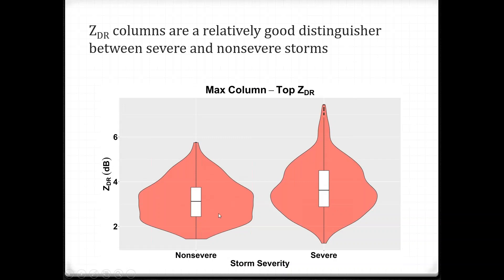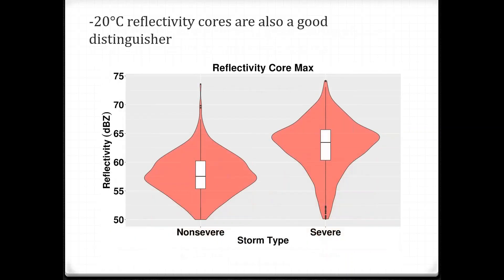A similar idea applies to what I've called max column top ZDR — stepping up to the top elevation angle where you can see 1+ dB ZDR within the column and measuring the maximum ZDR value there. We see a statistically significant difference in max ZDR at column top between severe and non-severe storms. One important finding is that minus 20°C reflectivity cores are also a pretty good distinguisher between severe and non-severe storms — maybe even better than ZDR columns.